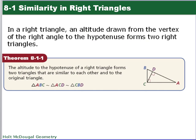In a right triangle, an altitude is drawn from the vertex of the right angle to the hypotenuse. So here's the altitude, and it forms two right triangles. The theorem says the altitude to the hypotenuse of a right triangle forms two triangles that are similar to each other and to the original triangle. When you have similarity statements, the vertices have to match up so that the angles are in the right order.